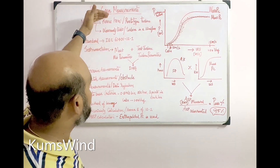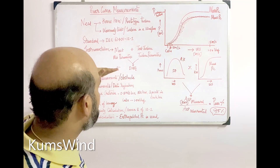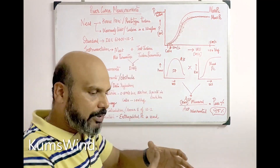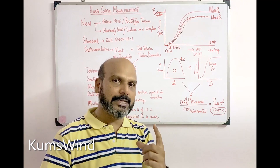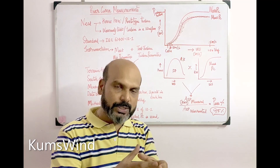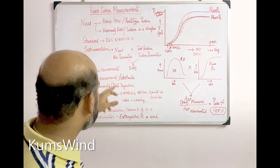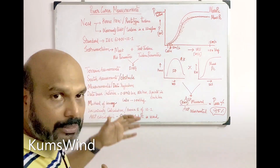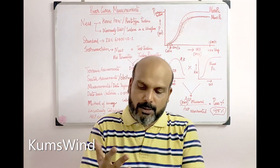The next step in the process of power curve measurement is terrain assessment, which involves selection of the test turbine. If a wind farm has 10 to 15 turbines, you need to select one turbine that is representative of the whole wind farm on which the power curve measurement will be conducted. This is done through the process of terrain assessment and sector or obstacle assessment.